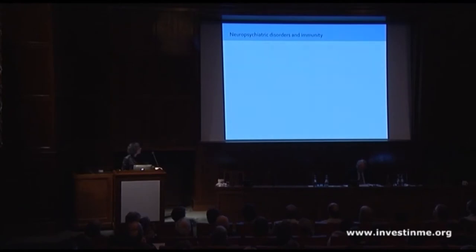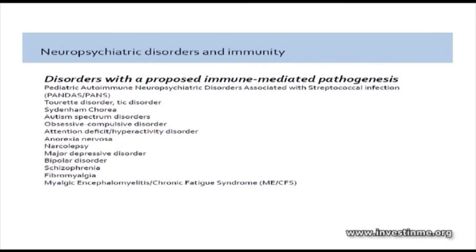If you look within the disorders themselves, there's also been a great effort to try to identify immune factors in association with classical brain or mental health conditions, ranging from PANDAS — which is associated with group A beta-hemolytic streptococcal infection — Tourette disorder, Sydenham's chorea, which is a classical neuroimmune disorder associated with group A beta-hemolytic strep, autism, OCD, schizophrenia, and then even ME-CFS.